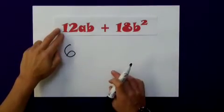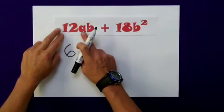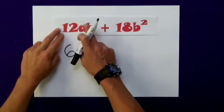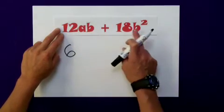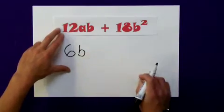Now I'm going to consider the letters. Are any of these letters common to both terms? Well, the a isn't, because it only appears in this term here. But b does actually appear in both terms. So b is the letter which I can take out.